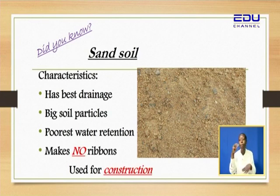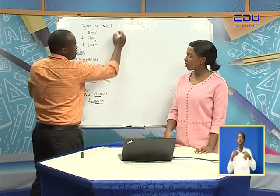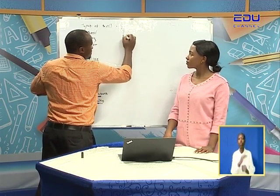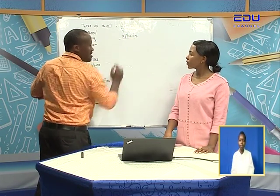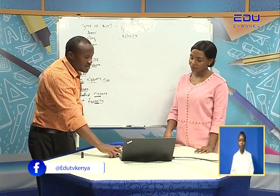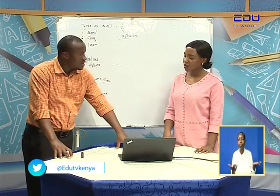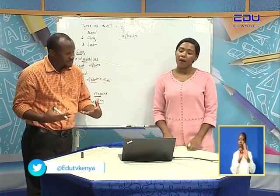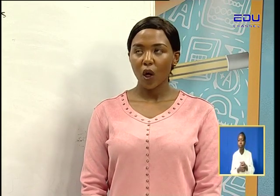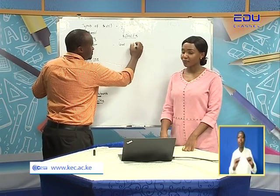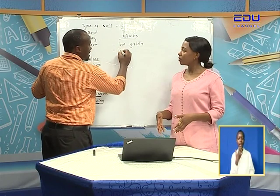Now, when you move the soil from one place to another, that is called erosion. Being erosion, what are some of the effects? In our previous lesson we talked about low yields — that is one. And then we have mudslides and landslides. Some of these effects are negative.